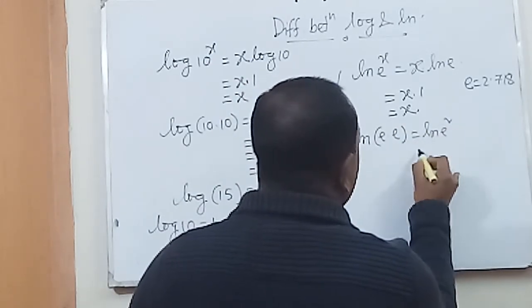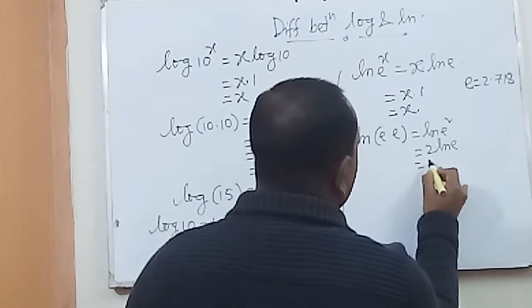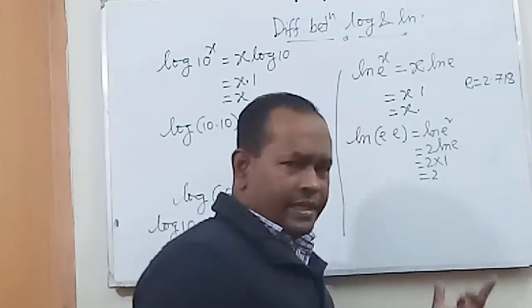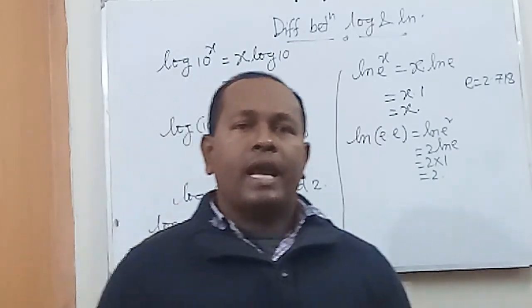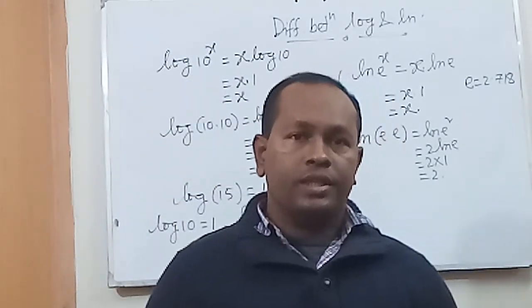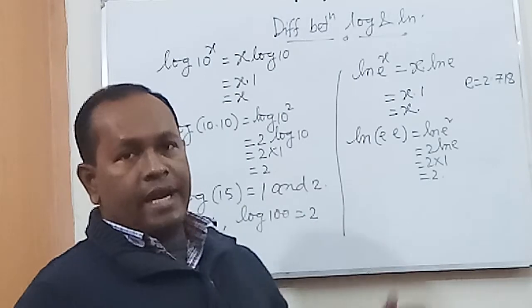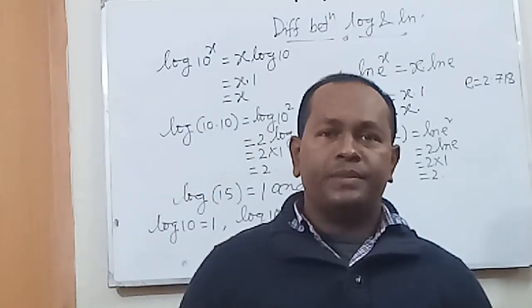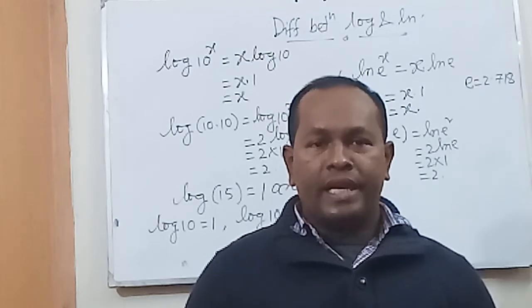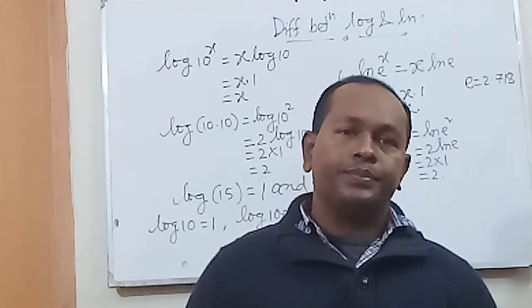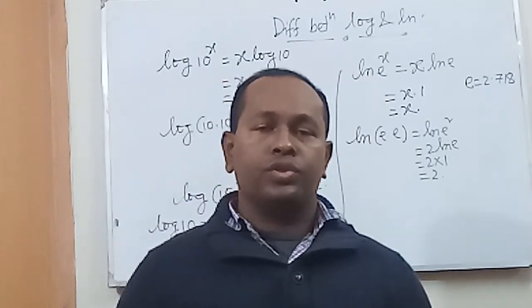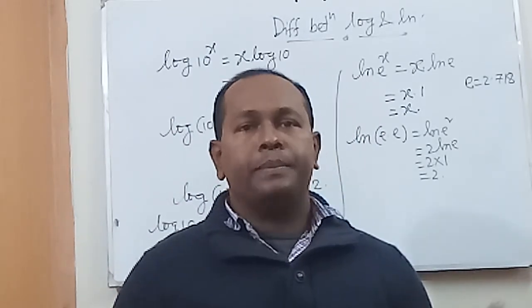Log e squared equals 2 times 1, which is 2. That's the difference between common log and natural log. That brings me to the end of my presentation. I hope this is enough of what I wanted to say at the beginning.